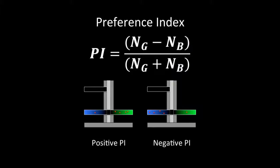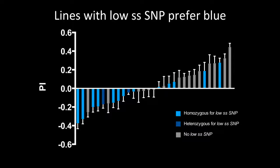Our hypothesis was that the low spineless SNP causes a low spineless on-off frequency, so we should expect to have more rhodopsin 5, and thus, the flies should prefer blue light. And indeed, that's what we see.